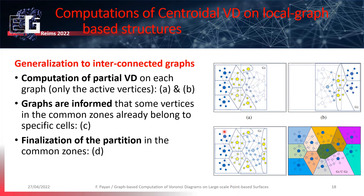Then, the graphs are mutually informed that some common vertices already belong to specific cells. Once this information is known by each graph, it is possible to finalize the partitions in the common zone — in other words, computing the final shape of the partial cells. Finally, we obtain the global tessellation of the entire domain.